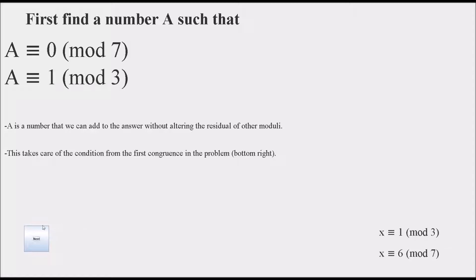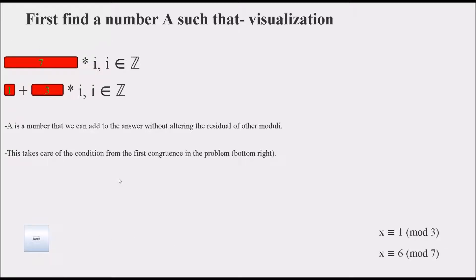Here is a visualization of A. You can see it's the same as the visualization for the conditions of the problem, except that the 7 multiplied by the unknown integer i does not have 6 added on because we're trying to find the number that does not affect that equation.